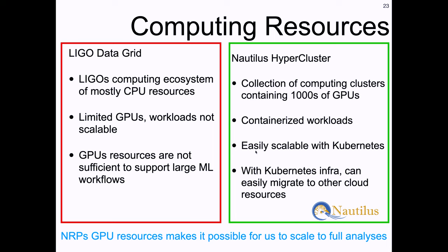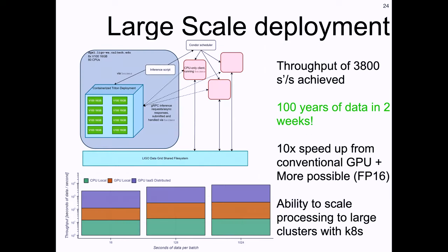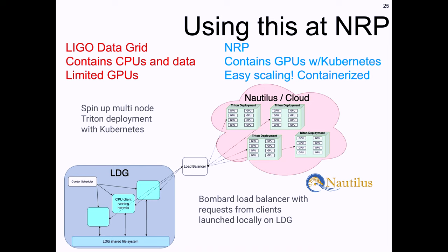Our toolkit built on containerized workloads and Kubernetes was perfect for Nautilus. We were happy to be among the first users. Previously we were using the LIGO data grid, which has limited GPU resources. Our infrastructure runs CPUs on the LIGO data grid, takes data, and sends it to Nautilus. We run a load balancer and deploy a large-scale GPU service on Nautilus that talks to the LIGO data grid. This infrastructure allows us to run things to scale relatively easily. I don't have published results yet, but I can show a few things we've done.